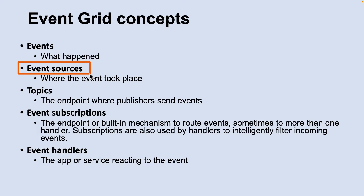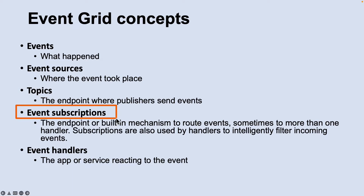The next concept is event sources. An event source is where the event happens, and each event source is related to one or more event types. Next are topics. The Event Grid topic provides an endpoint where the source sends events. The publisher creates the Event Grid topic and decides whether an event source needs one topic or more than one topic. Another concept is event subscriptions — a subscription tells Event Grid which events on a topic you are interested in receiving, and when creating the subscription you provide an endpoint for handling the event.